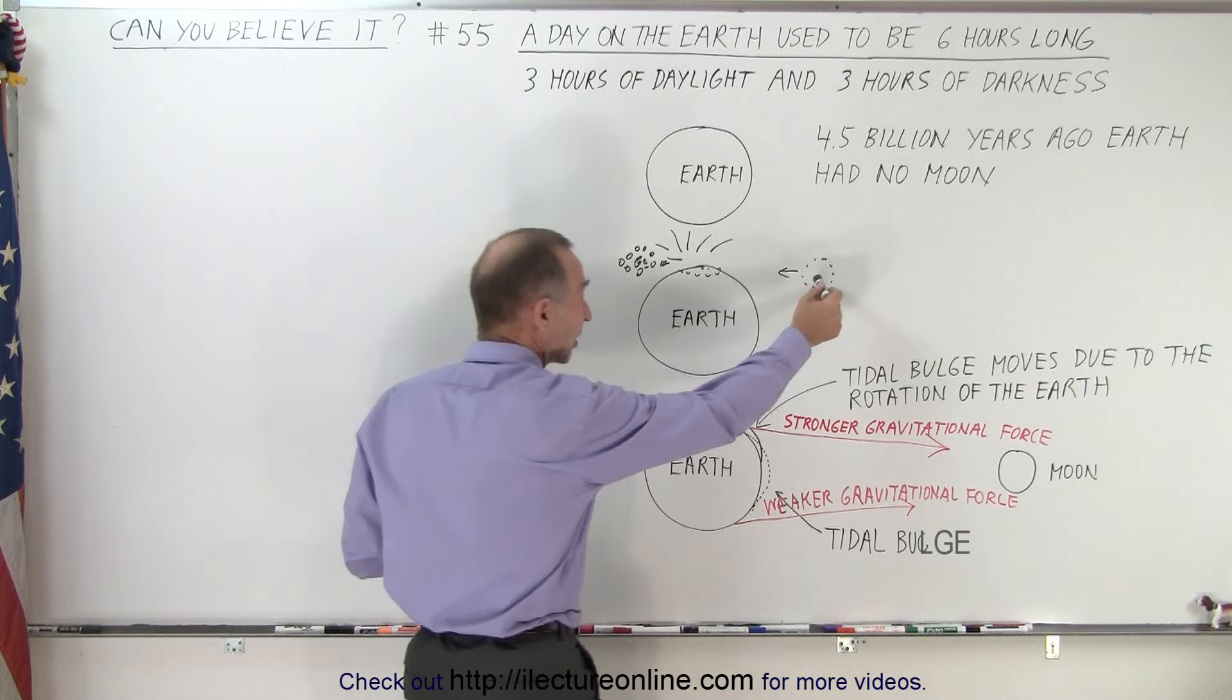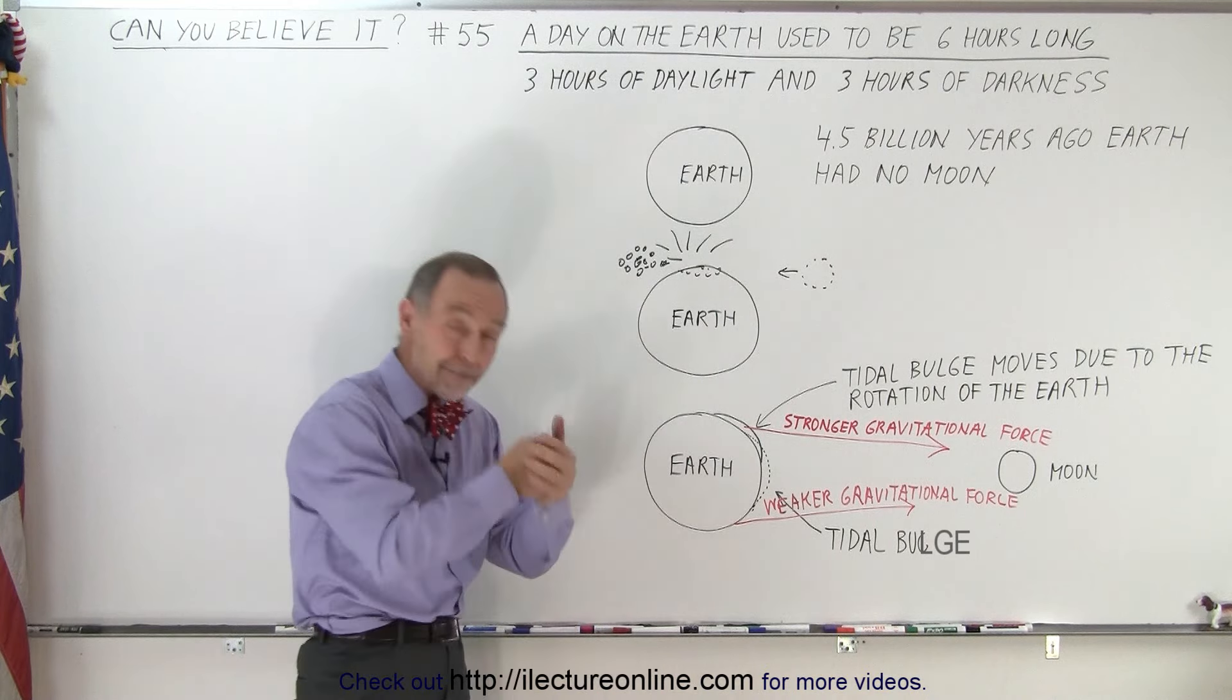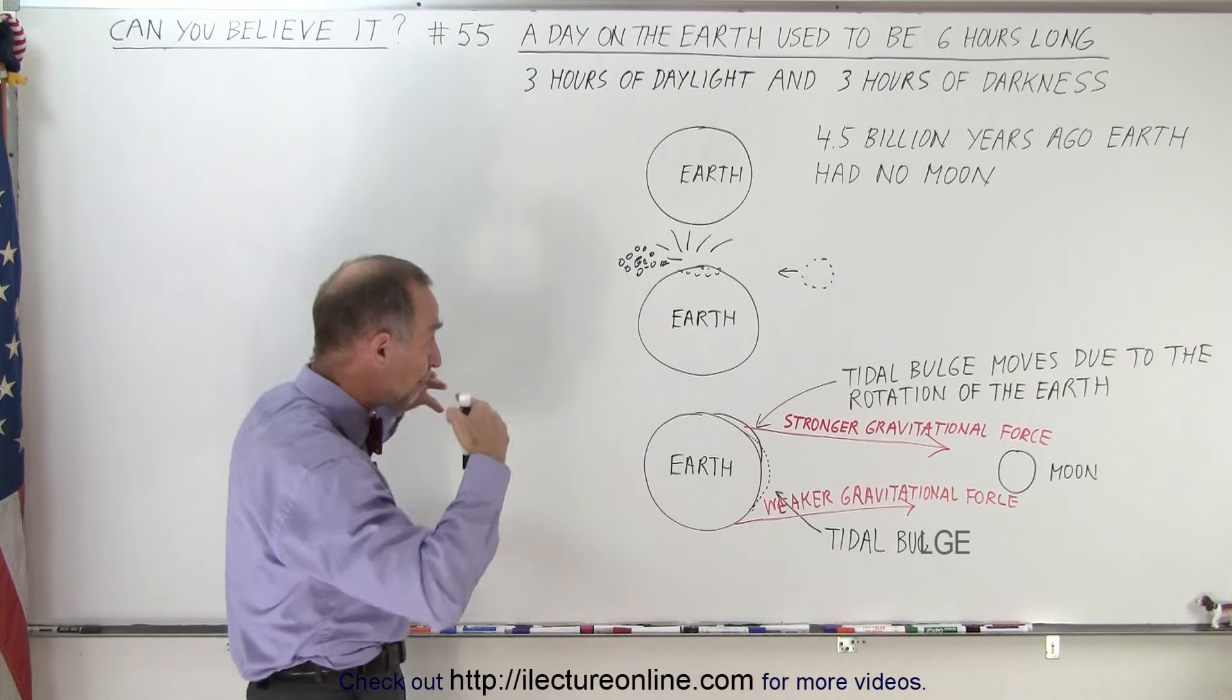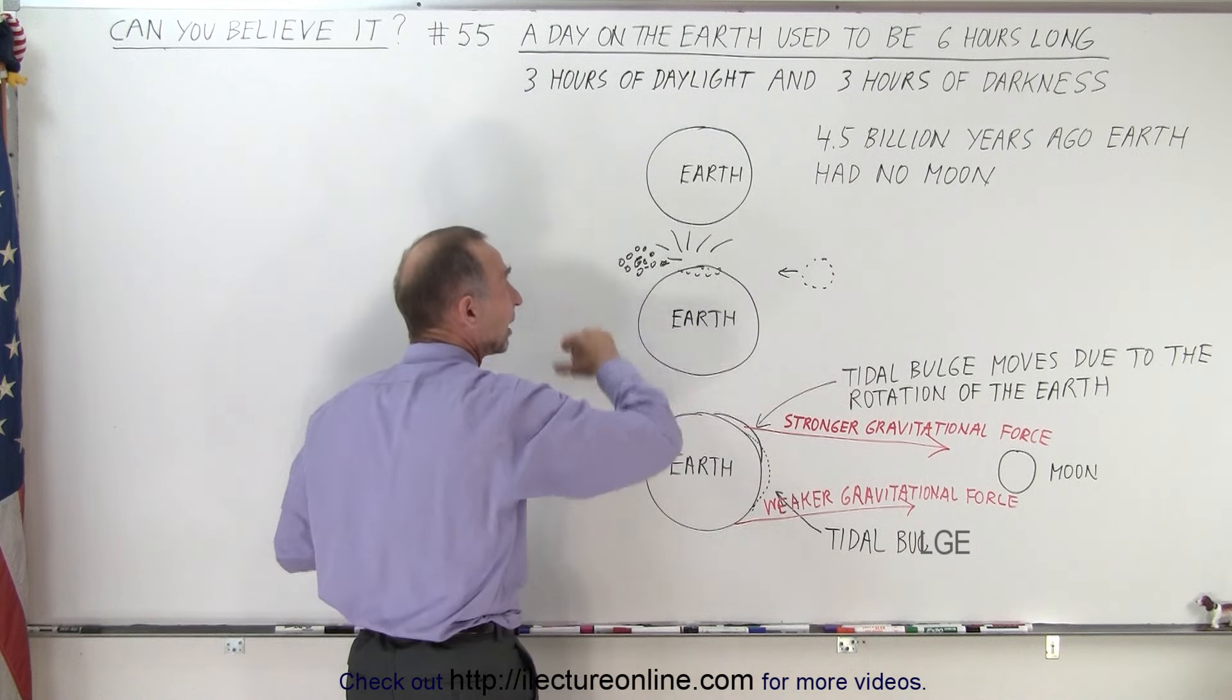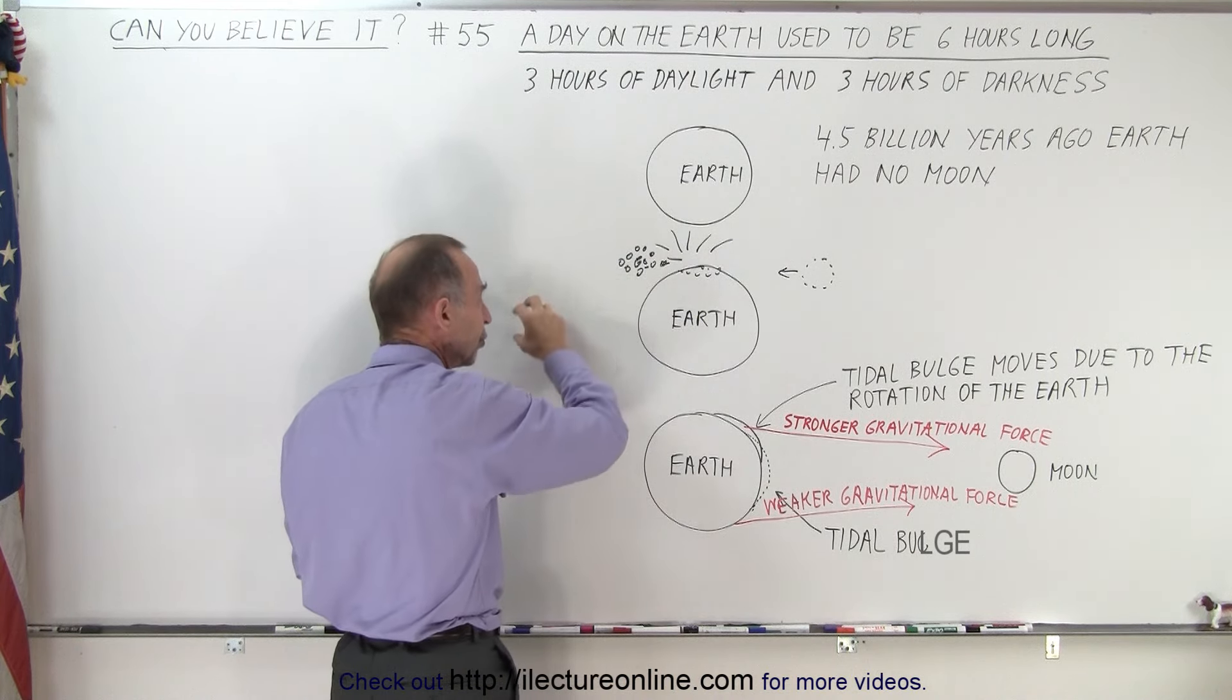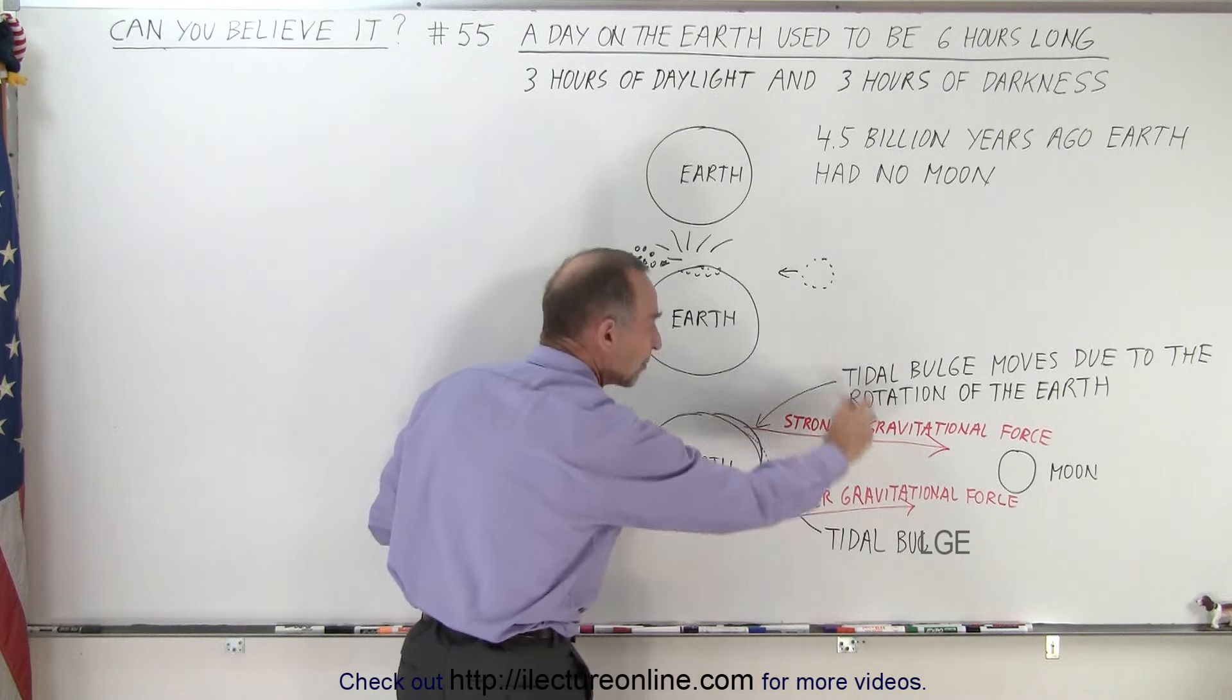But then a very large object ended up impacting into the earth, a tremendous impact which knocked a piece of the earth off the surface, and those pieces then re-coalesced into a sphere which then became the moon.